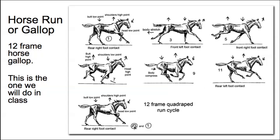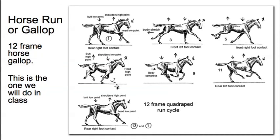You're going to have frame one and then thirteen, which are the same. Set your timeline in Maya to thirteen frames and make sure that one and thirteen are the same. Then seven is your halfway position, and then you're going to fill in three, five, nine, and eleven.